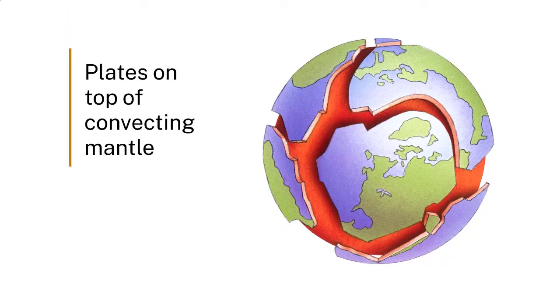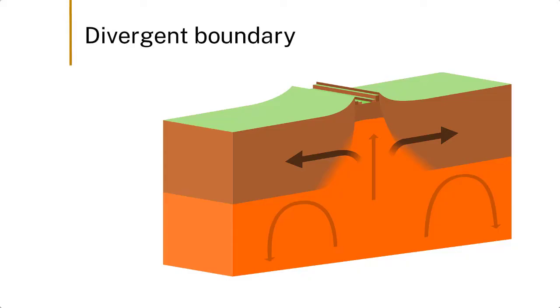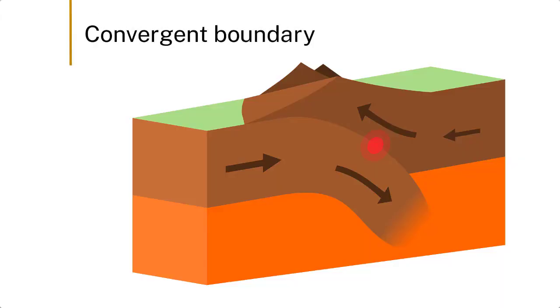We have places where we're making oceanic crust. We call it a divergent boundary because the crust is diverging. And then when it meets another piece of brittle surficial crust, whether it be continental or oceanic, one of them will subduct — so that'll be a convergent margin.